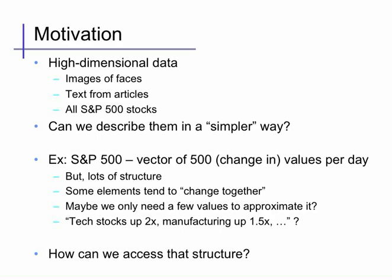As an example, suppose we had a vector of 500 stock price changes from the S&P 500. Although this is typically described with 500 real values per day, we might imagine that there are lots of structures in the way these data change, so we might not need to describe them using all 500 numbers. If we wanted to compress the data and describe it using only a few values, we might try to explore this structure — for example, elements of this vector tend to change together.